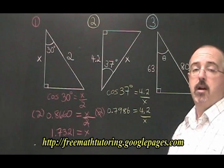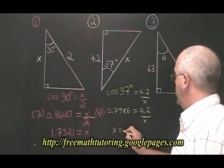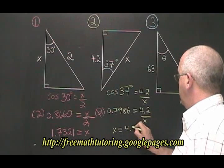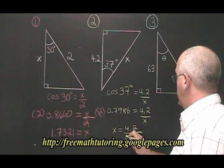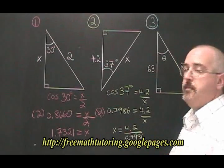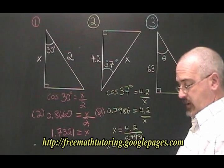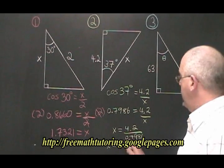And then, since our variable is in the denominator, we do the trade. Our answer is x equals 5.2590.